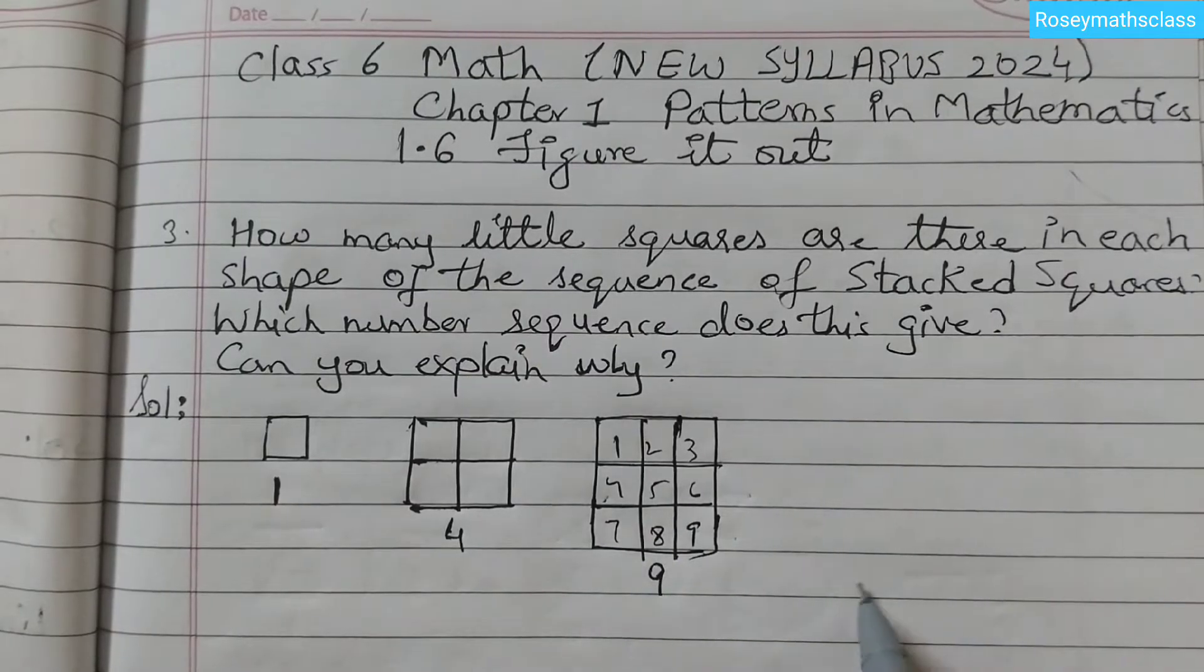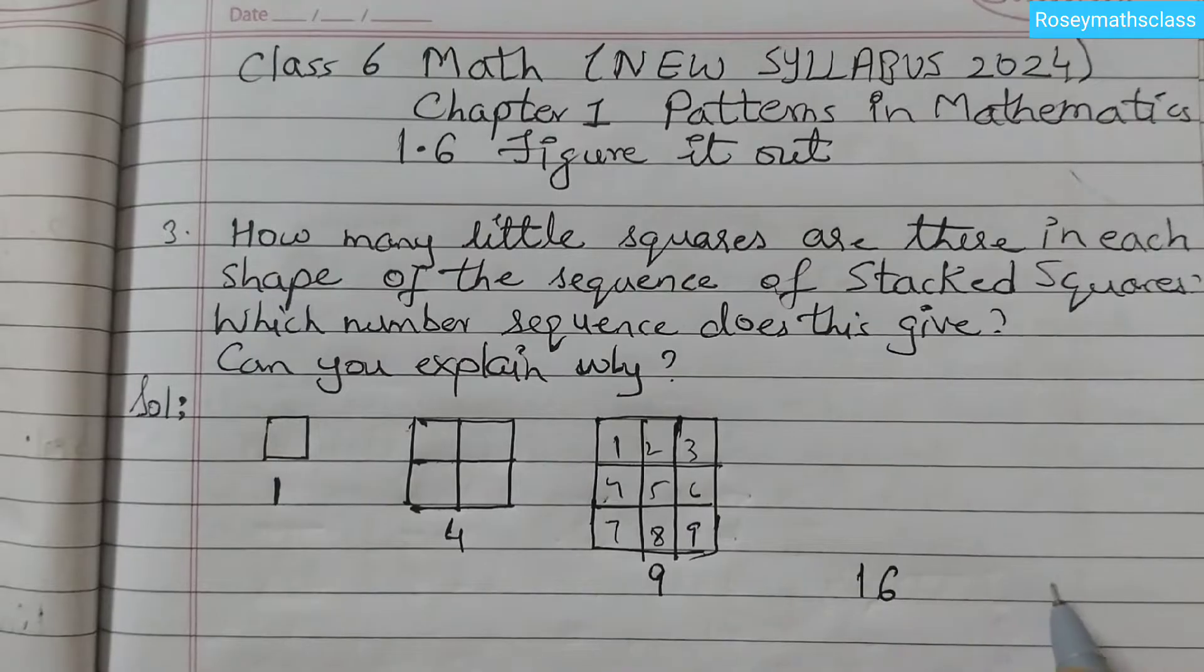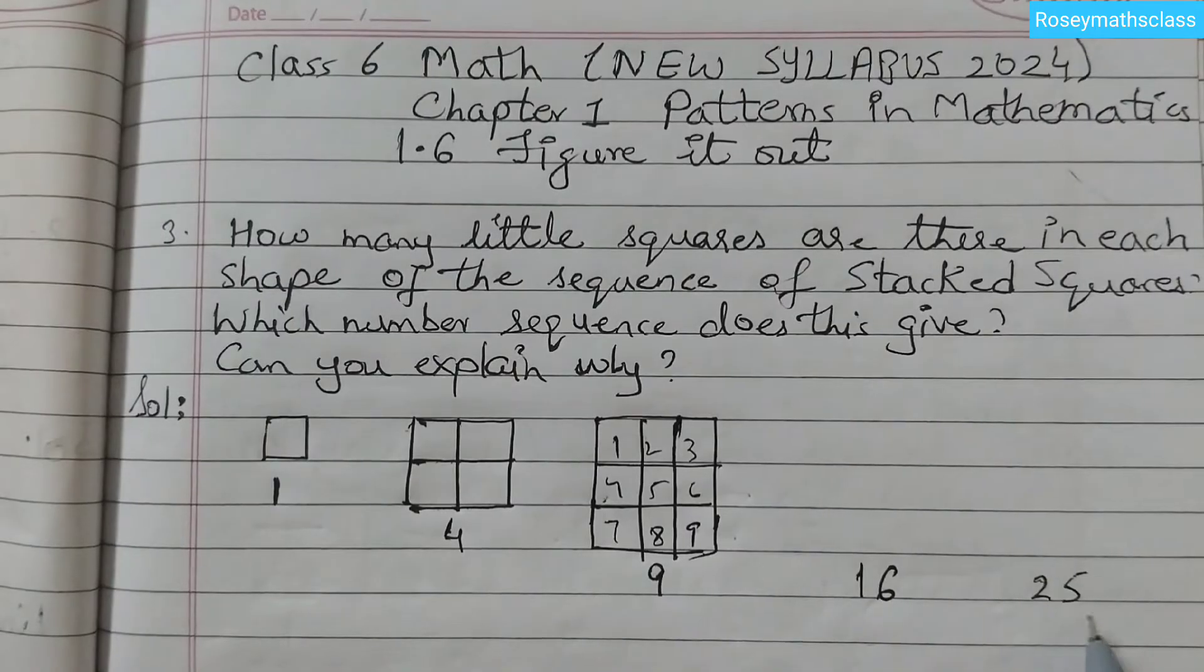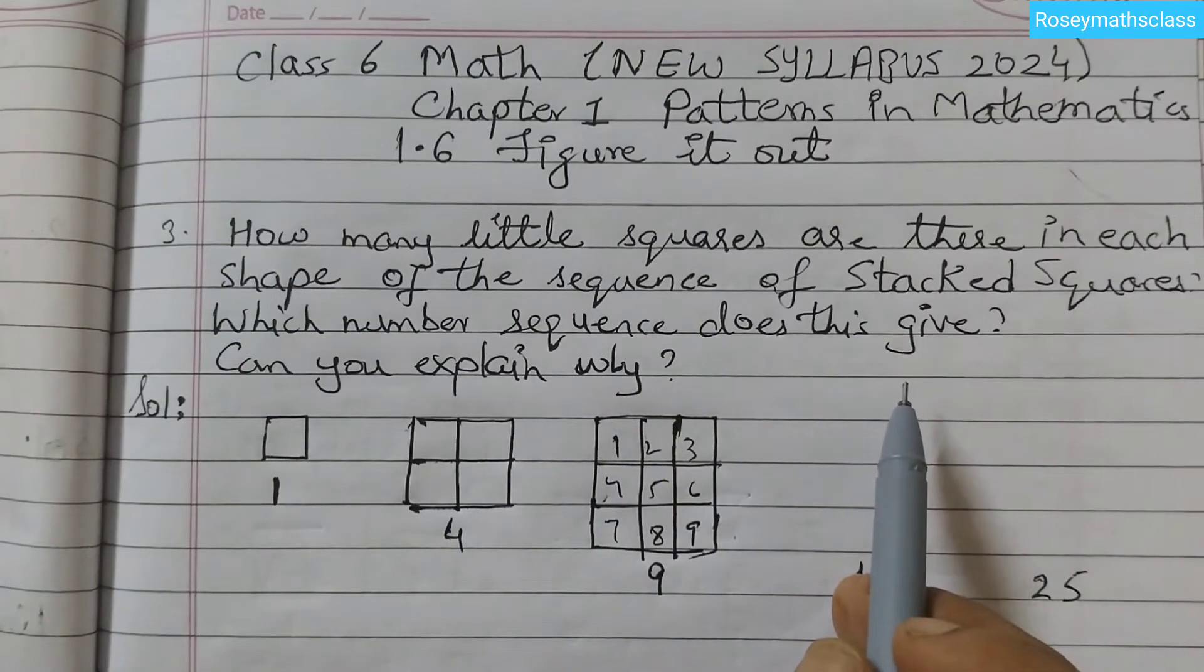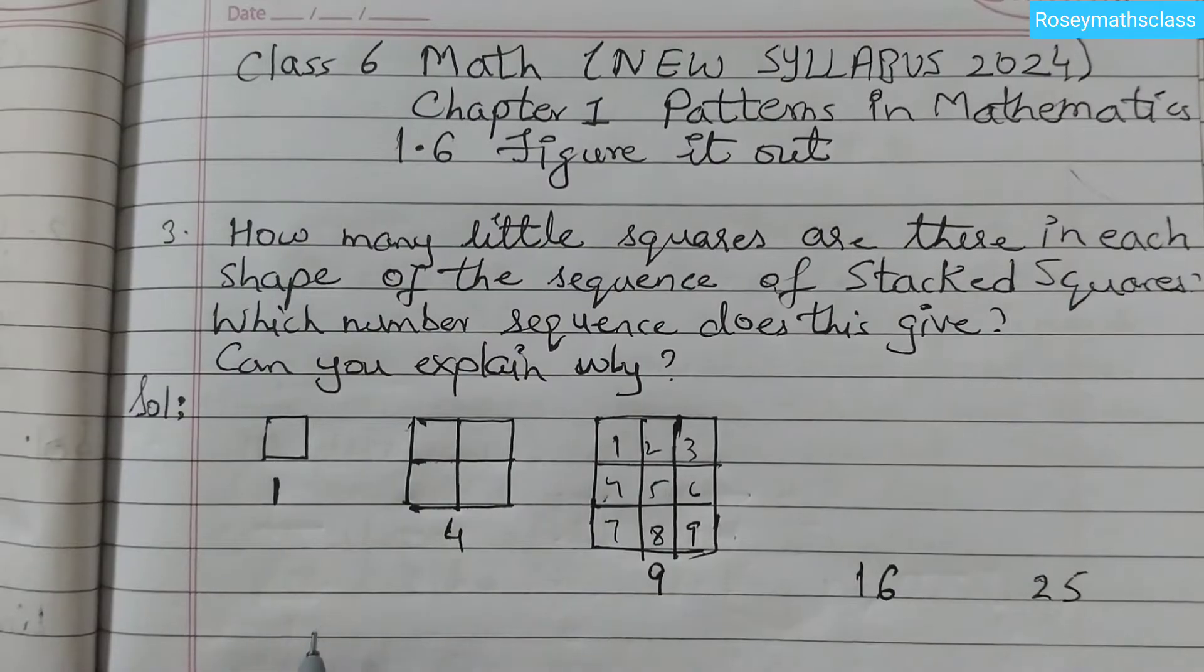9 squares. The next one will have 16 squares. Then we will have 25 squares. This we have already learnt before. So which number sequence does this give? It gives the sequence of square numbers. These are all square numbers.